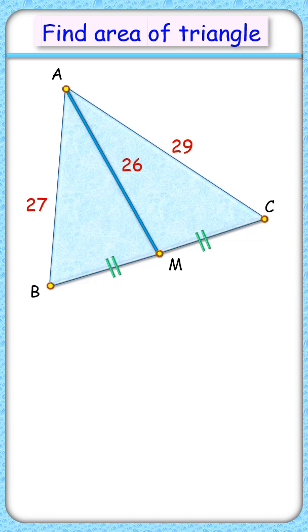Can you find area of this triangle where two of the side lengths and the length of median is given? Let's check the solution.